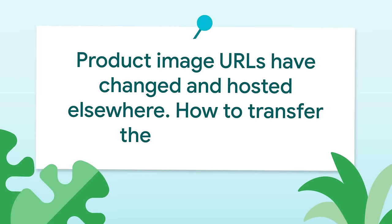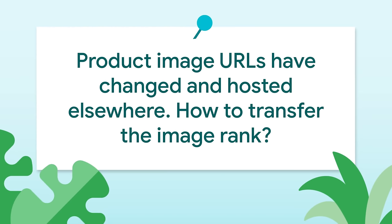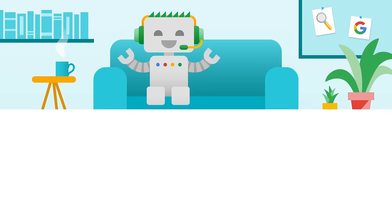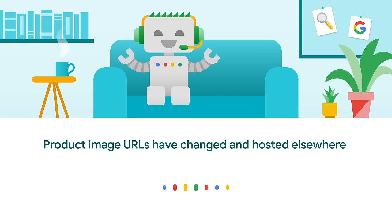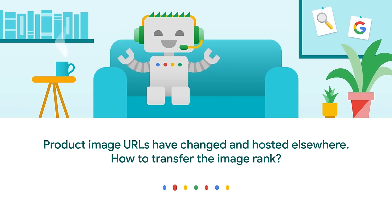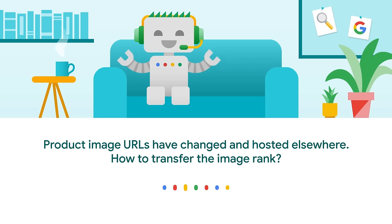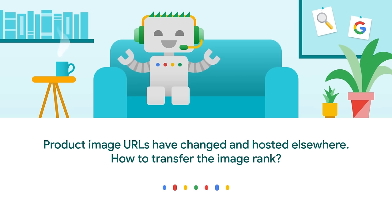Product image URLs are changed and now hosted on another server. How can I tell Google to transfer the current image rank to a new URL? The easy part is that you just have to update the image elements to point to the new image URLs. I also recommend taking this step to redirect the old image URLs to the new ones. Keep in mind that images tend to be recrawled less frequently, so changing image URLs is going to take a bit of time to be reprocessed across all of the search systems.